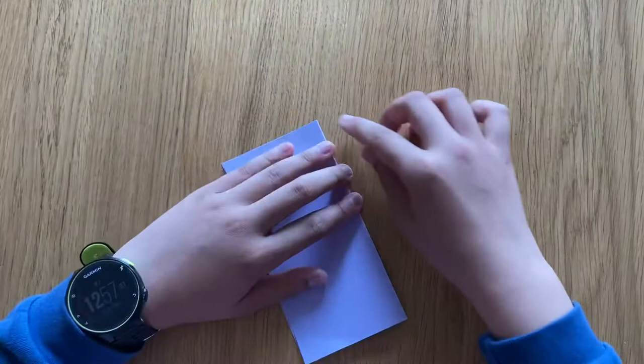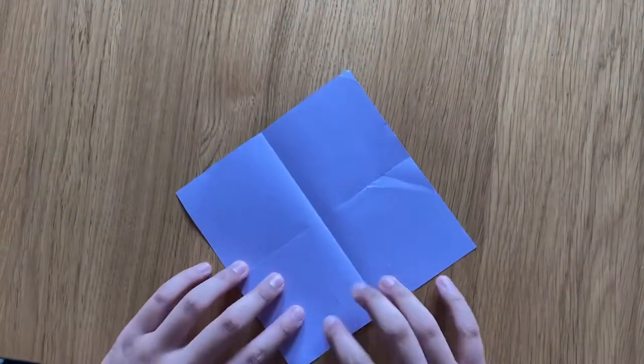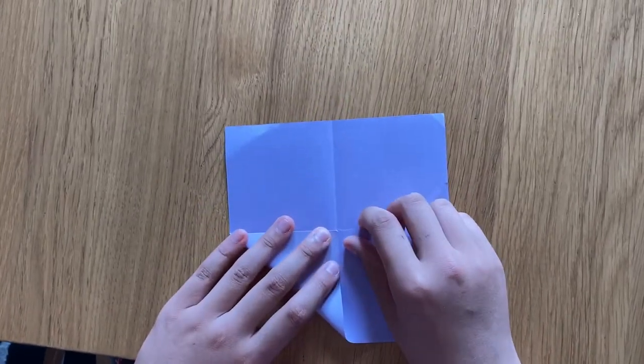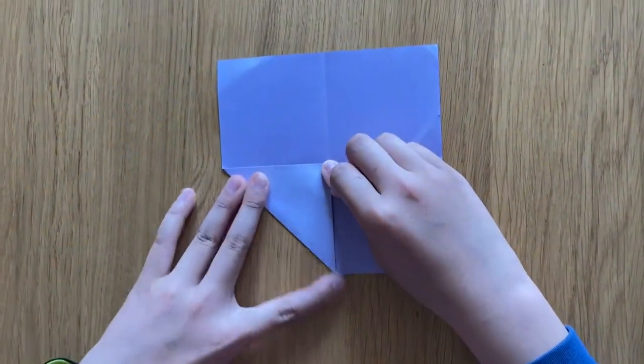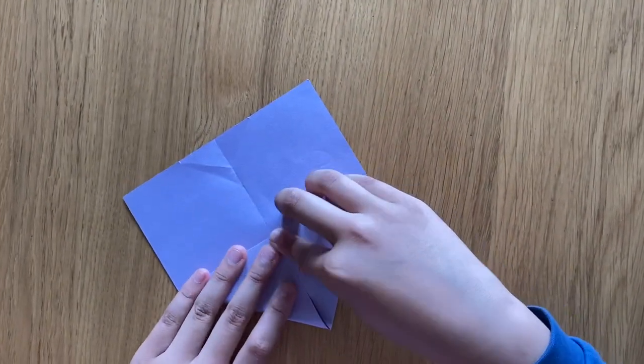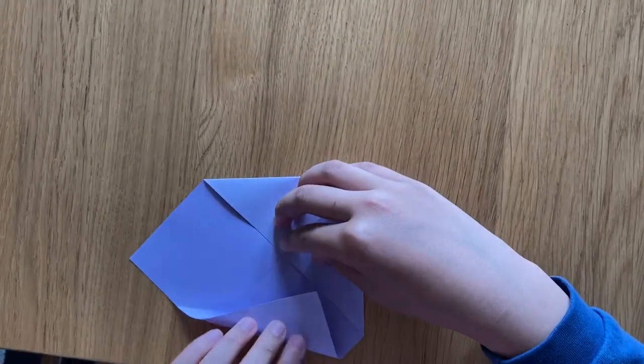And now you need to do something like this. Do it to the other side as well. So it splits the paper into four. Now see this angle? You need to put it into that angle, just like that. And then do the same to the other four as well, just like this, and this, and this.